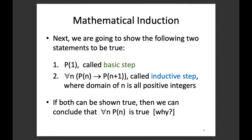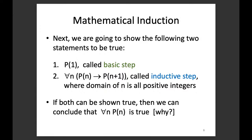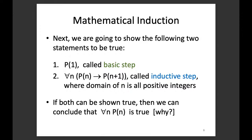We want to show this for all n. The idea of mathematical induction is to show two things instead of infinite cases. First, the basic step: show the case n = 1 is correct. Second, the inductive step: show that for every n, if P(n) is true then P(n+1) is true. If we can show both, then for all n, P(n) is true.